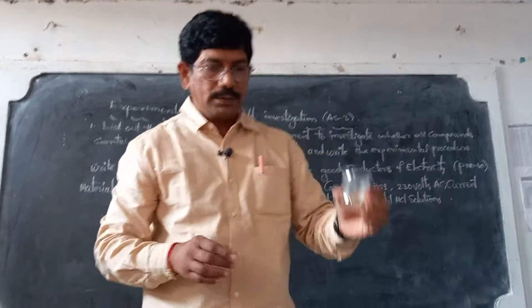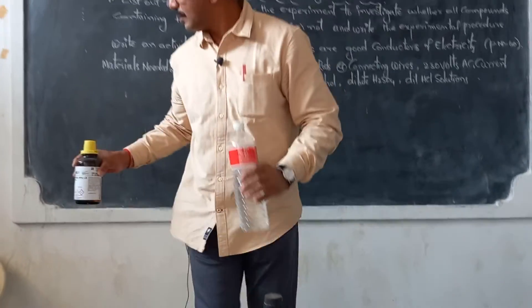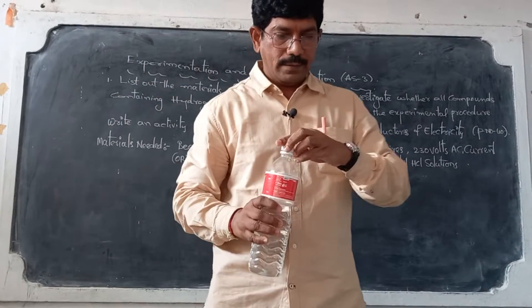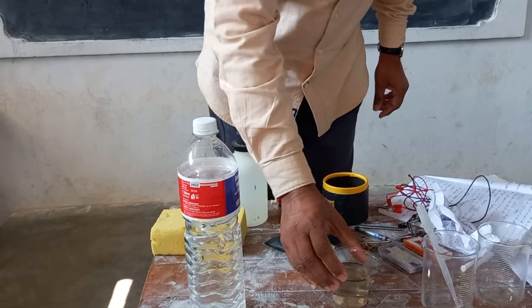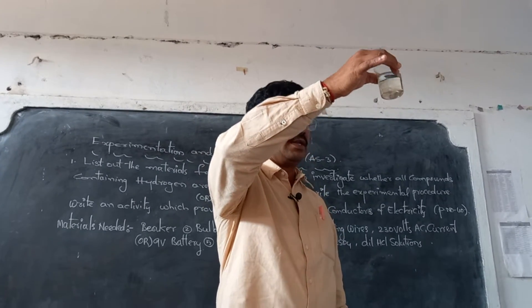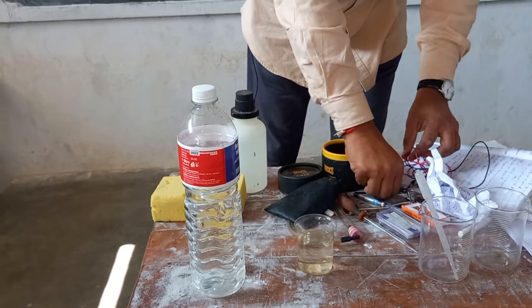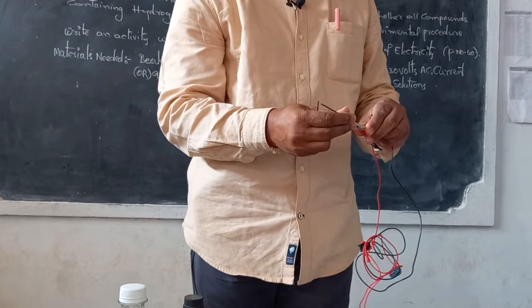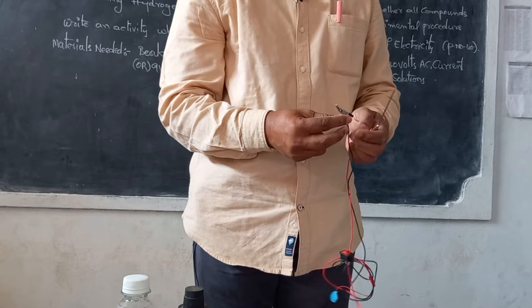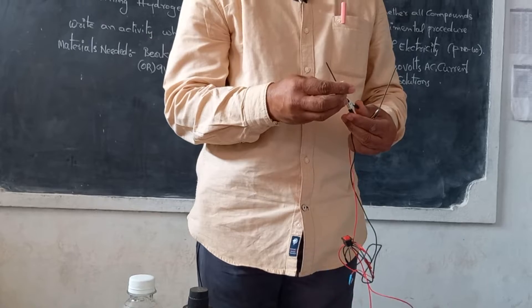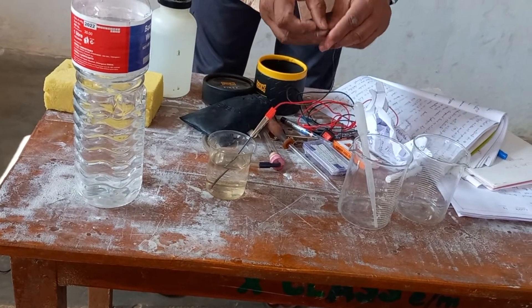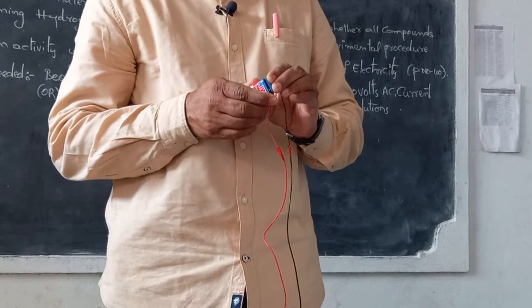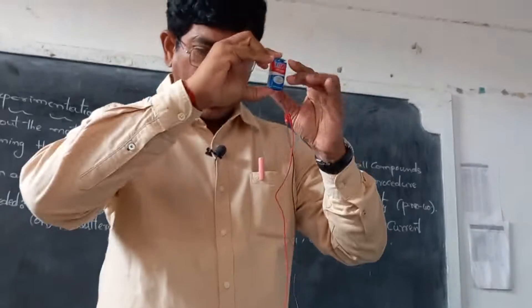Now, before starting the experiment, take the beaker and take distilled water. These are the two electrodes. I connected the two electrodes to the 9 volt battery — this is the power source.